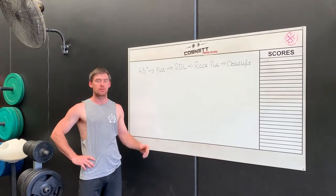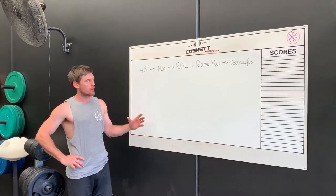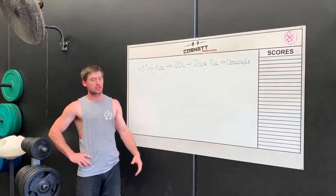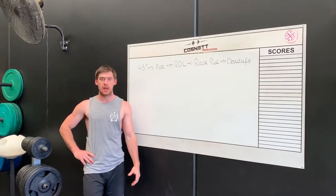Starting with the 45 degree back extension, followed by the flat back extension. Here we develop the musculature of the lower back, glutes, and hamstrings,